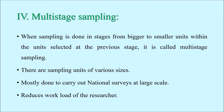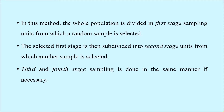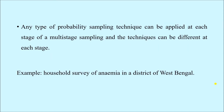Multi-stage sampling is most commonly done to conduct large-scale studies, for example national-level surveys, and it reduces the workload of the researcher. In multi-stage sampling, the whole population is first divided into first-stage sampling units from which we randomly select the samples. After selecting the first stage, we go into the second-stage units from which another sample is selected, and this is continued in subsequent stages. Any type of probability sampling technique can be applied at each stage.